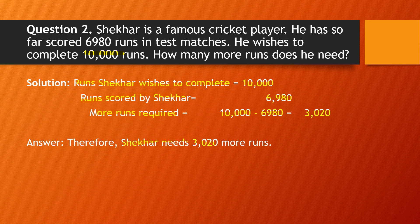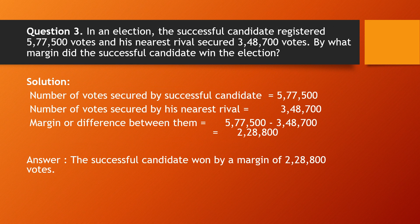Question number three: In an election, the successful candidate registered 5,77,500 votes and his nearest rival secured 3,48,700 votes. By what margin did the successful candidate win the election? In elections, whoever gets more votes wins — this is obvious. The margin is simply the difference between their votes.